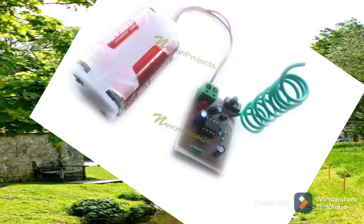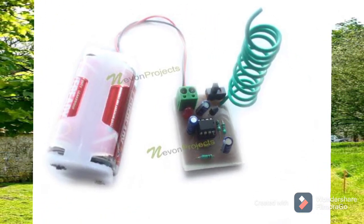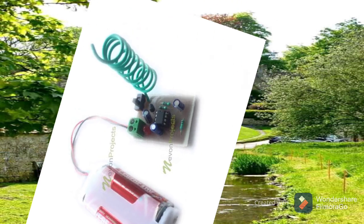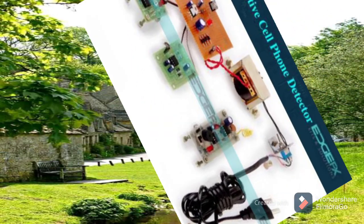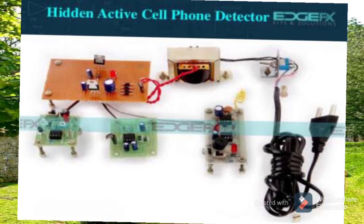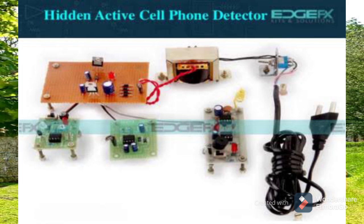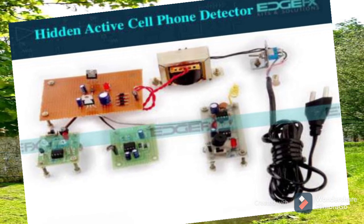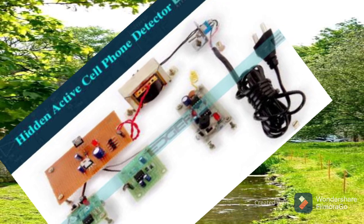The 0.22 UF capacitor connected at the input of the CA3130 IC plays a vital role in the circuit. Here the 0.22 UF capacitor is used to capture RF signals, and the capacitor leads act as an antenna for the circuit. The 0.22 UF capacitor stores the energy in it and the stored energy is applied at the input of the IC.